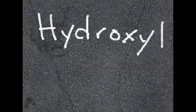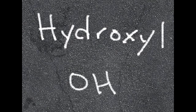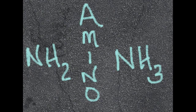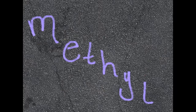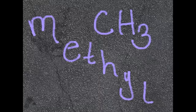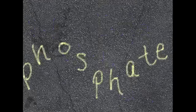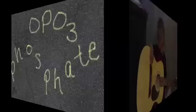There are seven functional groups — seven functional groups to know: hydroxyl, OH; carboxyl, COOH; amino, NH2, or NH3; sulfohydryl, SH; carbonyl, CO; methyl, CH3; and phosphate, O-P-O-3.